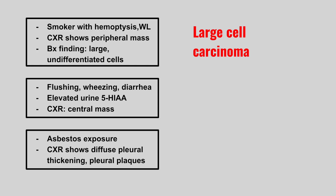Now we have a patient with flushing, wheezing and diarrhea, elevated urine 5-HIAA, and chest x-ray shows a central mass. This is a bronchial carcinoid tumor. Remember, this tumor can also affect the right side of the heart, and they also sometimes mention the urine 5-HIAA as a serotonin product.